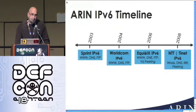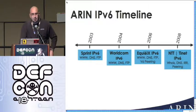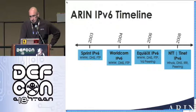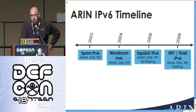RIPE NCC, the European counterpart to ARIN, had already done this. APNIC had done it too. We really wanted to get on the bandwagon. Over my time at ARIN, we deployed five IPv6 networks, and these days we're standardized on dual stack — we do V6 everywhere. I'll explain that as we go through this timeline.